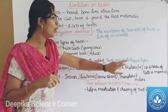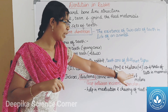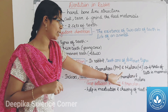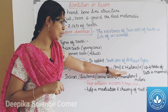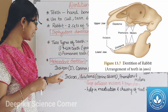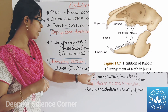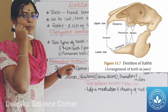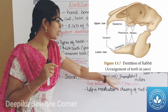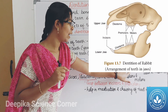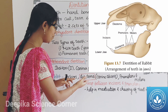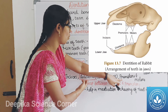In general, mammals have four kinds of teeth: incisors, canines, premolars, and molars. In the rabbit, canines are absent. There are gaps between the incisors and the premolars.